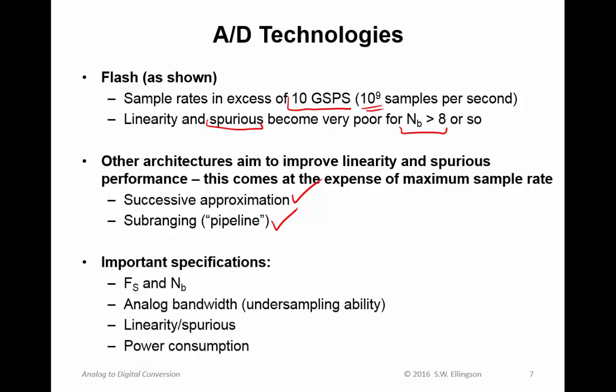Important specifications for ADCs include number of bits, the sample rate, in particular the maximum sample rate for which we achieve a certain level of performance, analog bandwidth so we can do undersampling. Linearity and spurious performance of course, and we talked about spurious-free dynamic range in previous lectures. For analog devices, spurious-free dynamic range applies to ADCs as well. Then power consumption. What we generally find is that higher sample rates require more power, so this is a strong trade-off in receiver design. We can have high rate digitization but it requires more power. If we want lower power we have to reduce the sample rate.